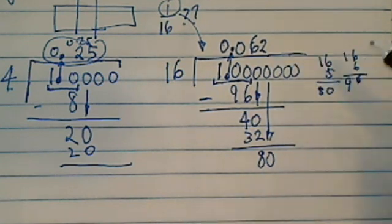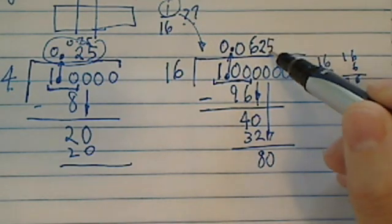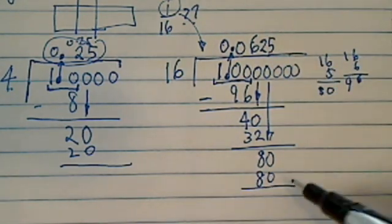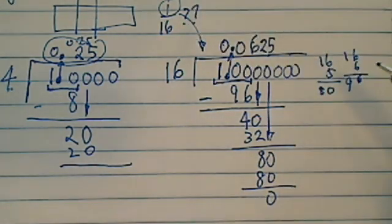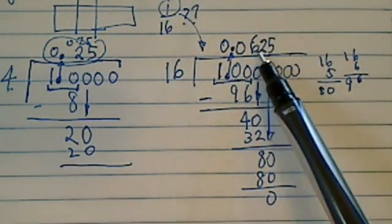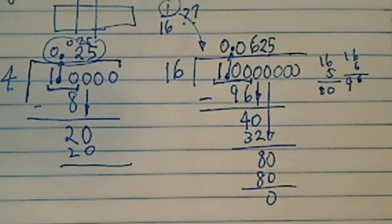Now, earlier we said this is a 5. 16 goes into 80 five times. So there you are. 1 over 16 is converted to 0.625. All right, have a confident day.